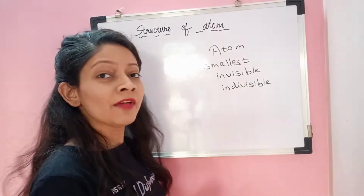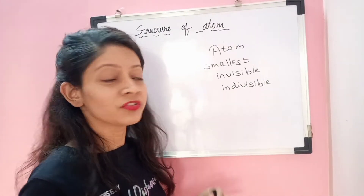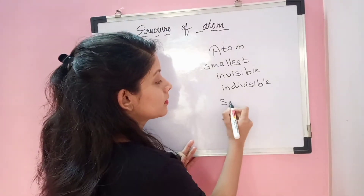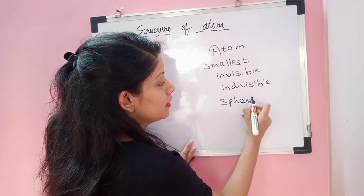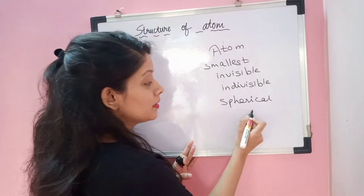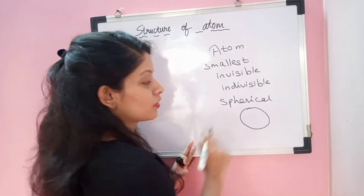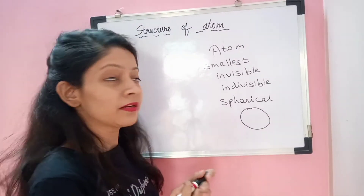So atom has a specific shape or structure. Atom has a spherical shape. Spherical shape means it is round in structure.